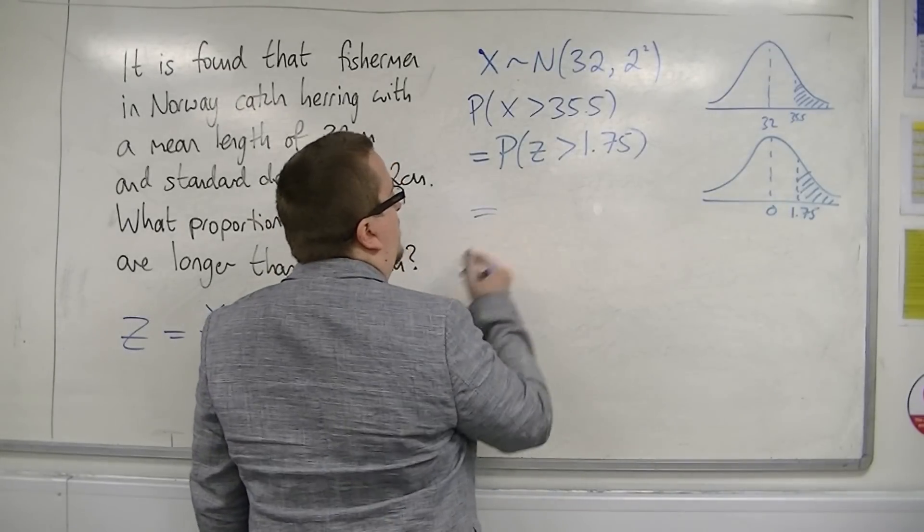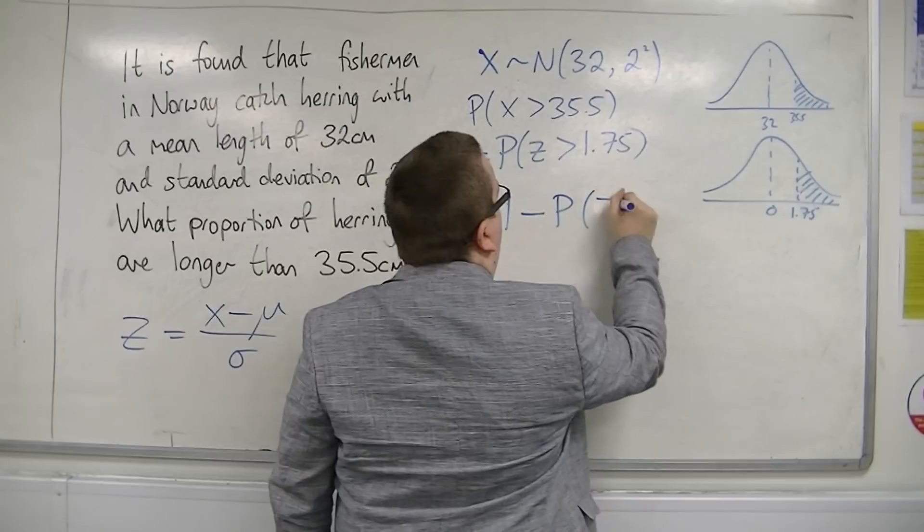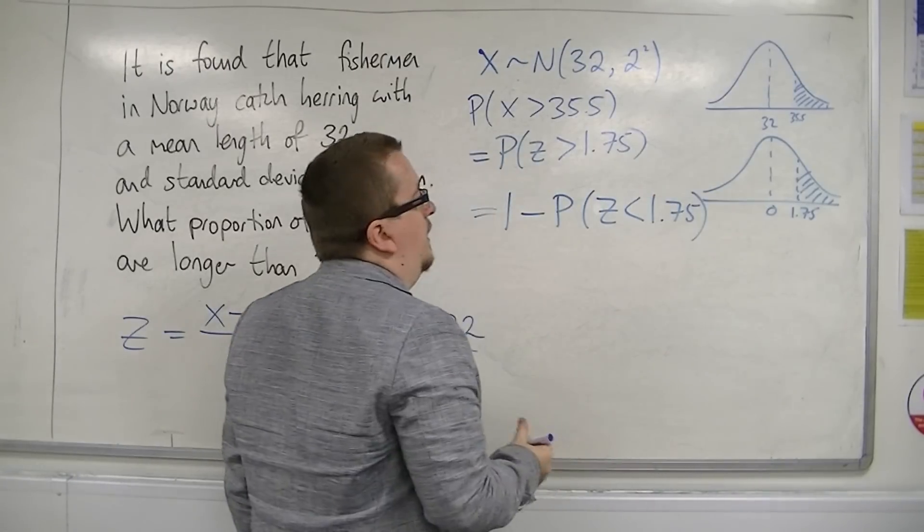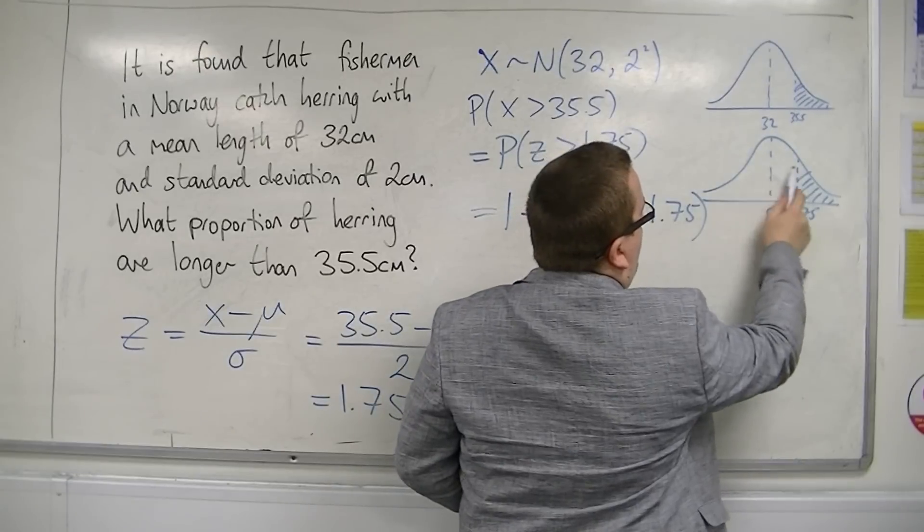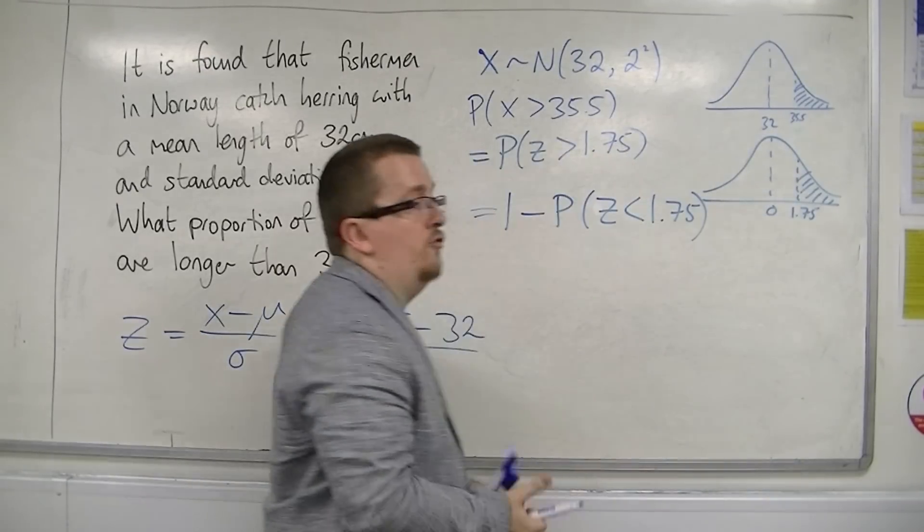So this is going to be equal to 1 take away the probability of z being less than 1.75. So I can work out the area to the left of 1.75 and take it away from 1.